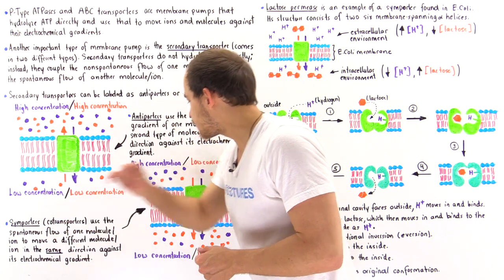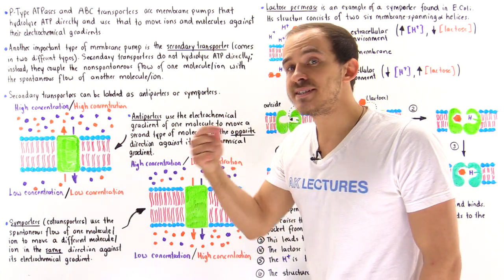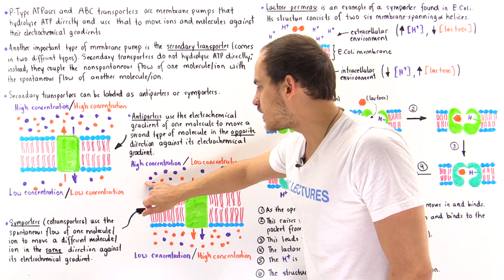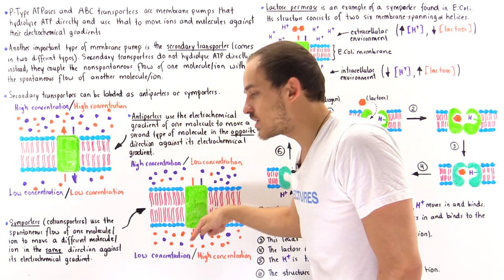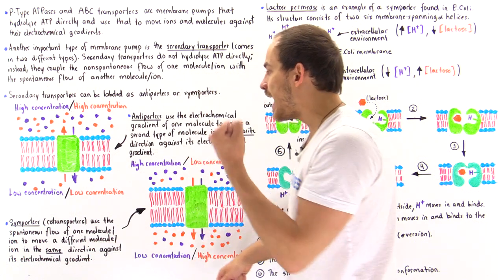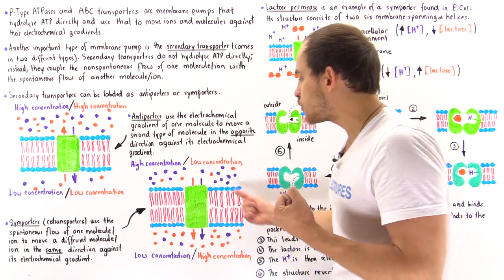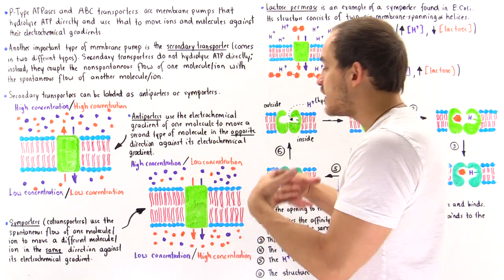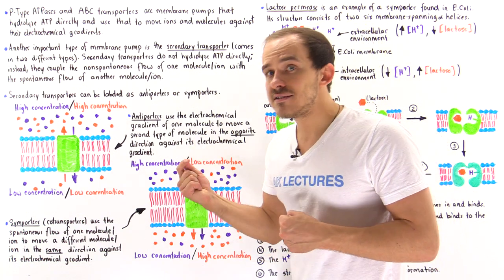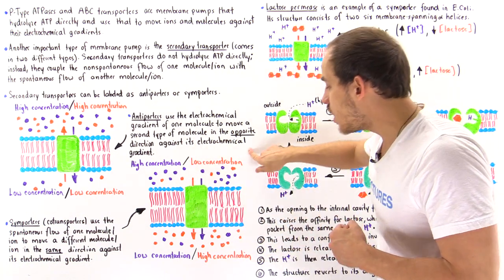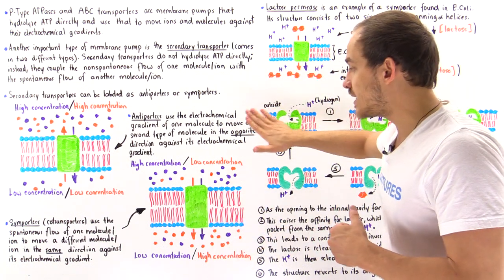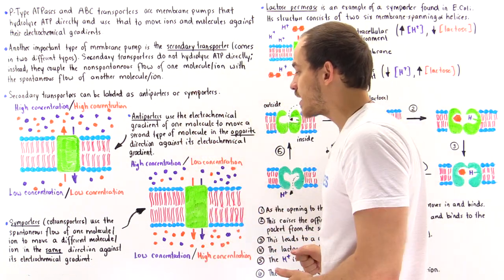So this symporter, also known as a co-transporter, allows the spontaneous movement of the purple molecules down their electrochemical gradient, releasing free energy. That free energy is captured and used to move the orange molecules against their electrochemical gradient, from a low to a high concentration, from the outside to the inside — in the same direction.